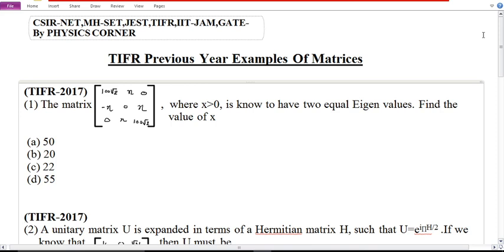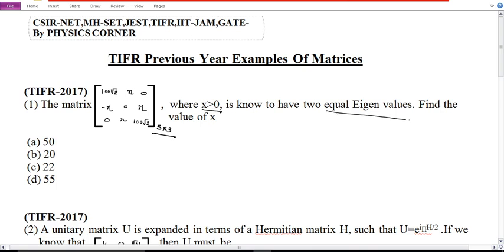See the example number first which was asked in TIFR 2017. The matrix is a 3 by 3 matrix given where x is greater than 0. It is known to have two equal eigenvalues. Find the value of x. So to find the value of x, A minus lambda I equals 0, this is the characteristic equation.